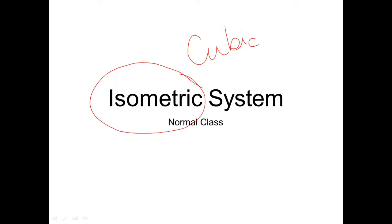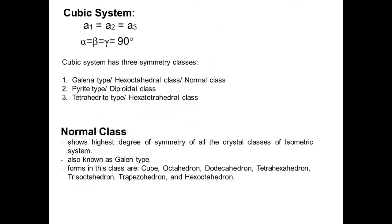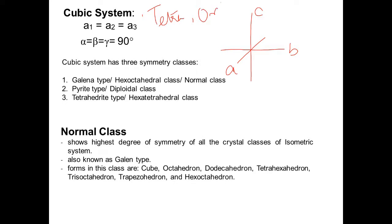In a cubic system, if we talk about the axes, it has three axes which are equal in size — a1, a2, and a3 — and the angles between the axes, alpha, beta, and gamma, are 90 degrees, so they are perpendicular to each other. The cubic system, the tetragonal system, and the orthorhombic system all have axes perpendicular to each other.